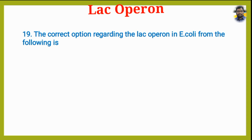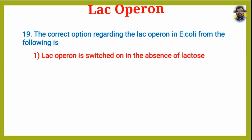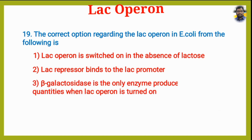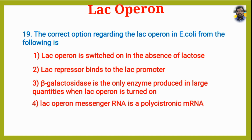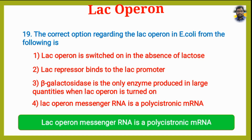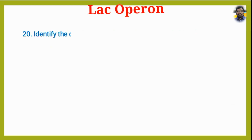The correct option regarding the Lac Operon in E. coli is? Option 1: Lac Operon is switched on in the absence of lactose. Option 2: Lac repressor binds to the Lac promoter. Option 3: Beta-galactosidase is the only enzyme produced in large quantities when Lac Operon is turned on. Option 4: Lac Operon messenger RNA is a polycistronic mRNA. The answer is Option 4, Lac Operon messenger RNA is a polycistronic mRNA.